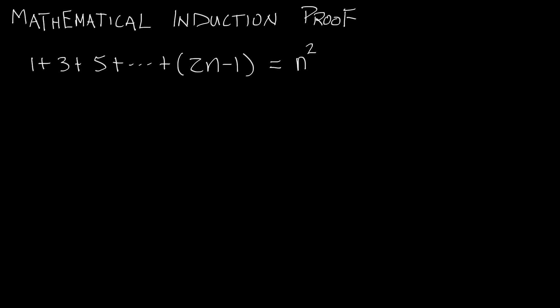Hey everybody, this is Paul. In this tutorial I'm going to be doing a proof by mathematical induction. I'm going to prove that 1 plus 3 plus 5, plus all the way up to some 2n minus 1 term, is all equal to whatever that n is squared.